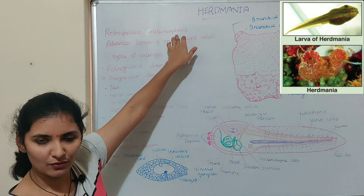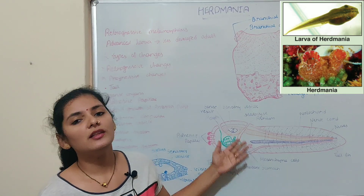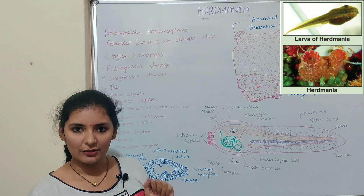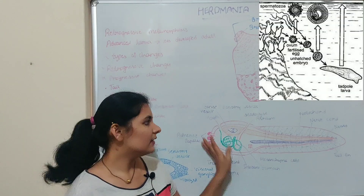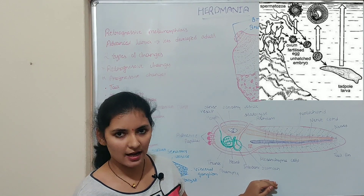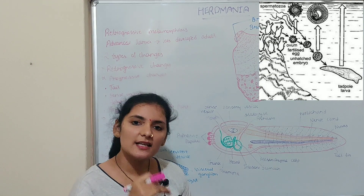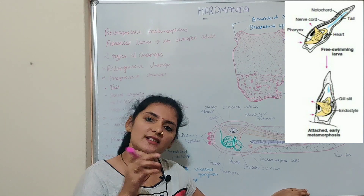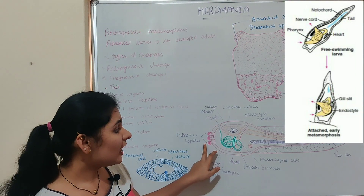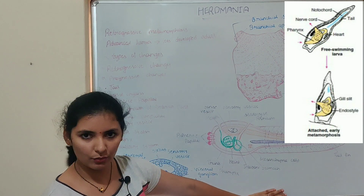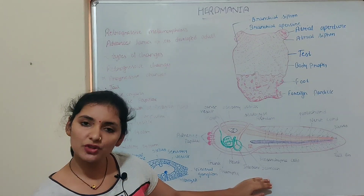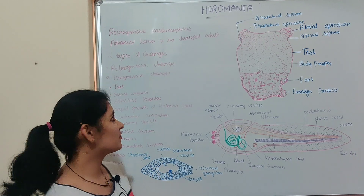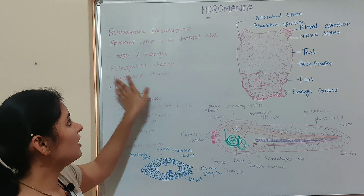We'll see what structural changes take place during the metamorphosis of the advanced ascidian tadpole larva into the less developed adult Herdmania. Soon after hatching, the larva swims for about 36 hours. After that, the larva becomes sluggish, sinks down to the bottom in search of a suitable substratum, and gets attached to that substratum with the help of adhesive papillae. The larva stands erect with the tail upward and the head downward. The metamorphosis involves two types of changes: retrogressive changes and progressive changes.